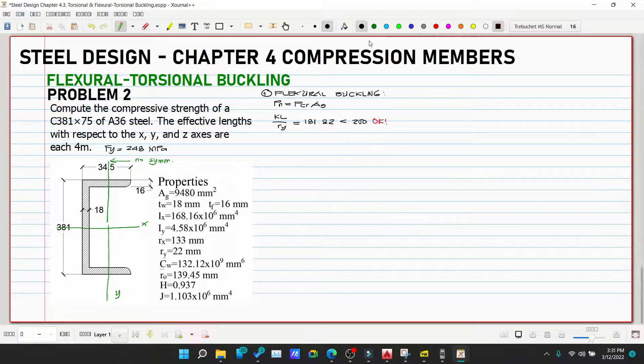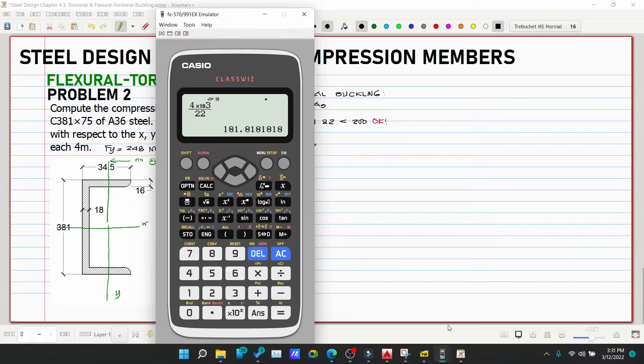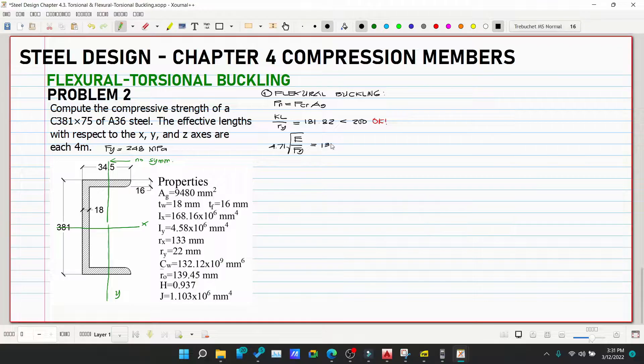181.82, which is less than 200 but close to the limit. Then check 4.71√(E/Fy): 4.71√(E×10³/248) = 133.76. So KL/ry is greater than 4.71√(E/Fy), therefore elastic buckling.